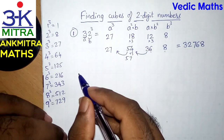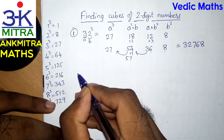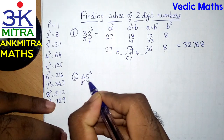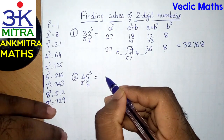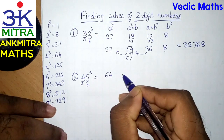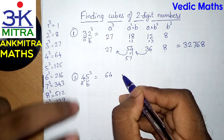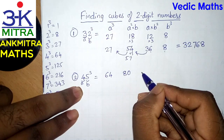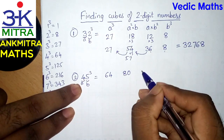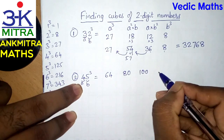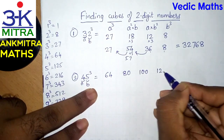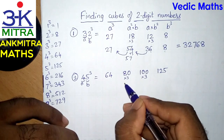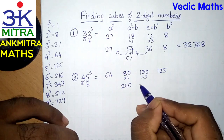Let's look at the next example — the cube of 45. For 45, A is 4 and B is 5. A cube is 4 cube which is 64. A square multiplied by B: 4 square is 16, and 16 multiplied by 5 is 80. B square multiplied by A: 5 square is 25, and 25 multiplied by 4 is 100. And the final number is B cube — 5 cube — which is 125. Now multiply the middle two numbers by 3: 80 multiplied by 3 gives 240, and 100 multiplied by 3 gives 300.